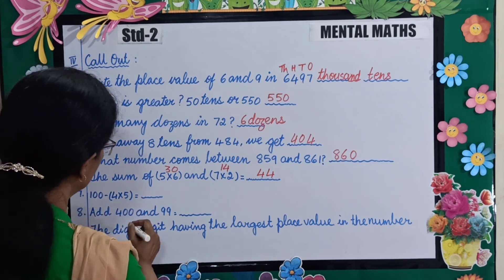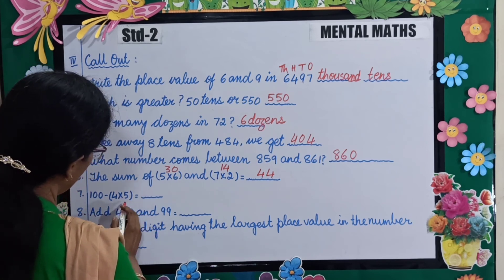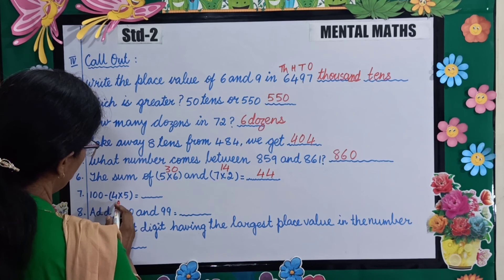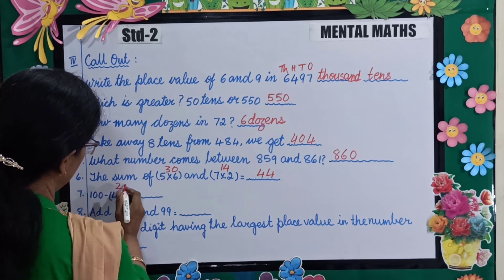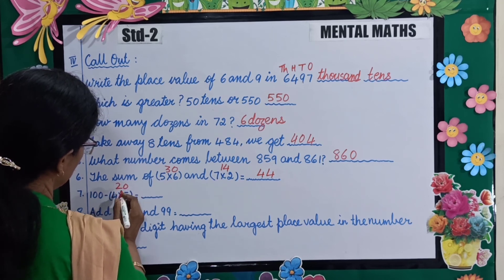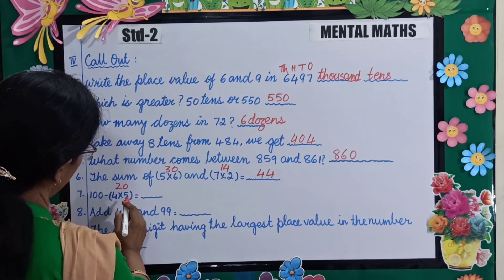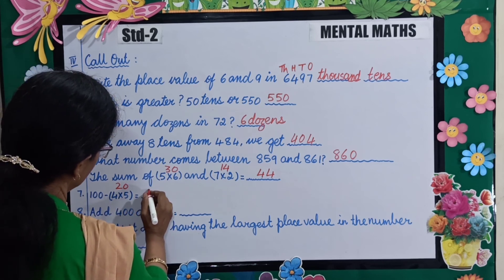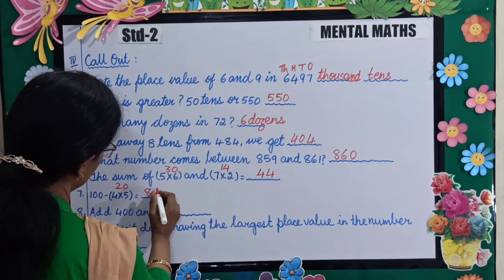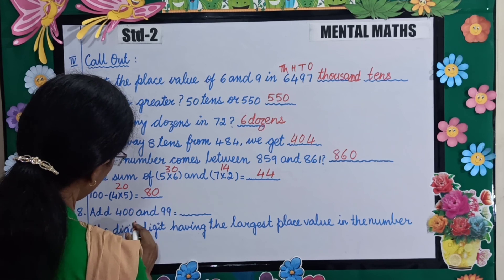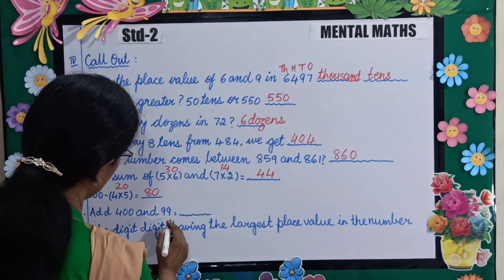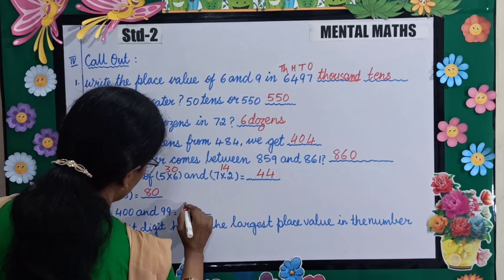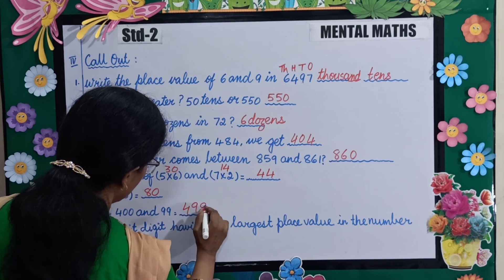100 minus 4 multiplied by 5 is equal to dash. So 4 fives are 20. You will subtract 20 from 100 and get 80. Next: add 499. The answer is 499.